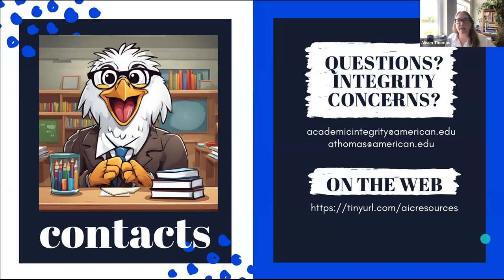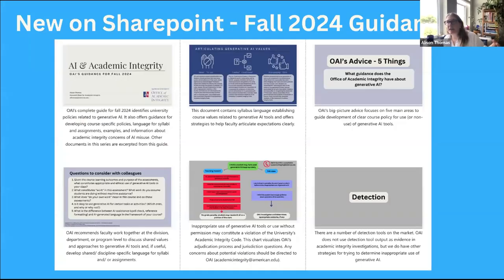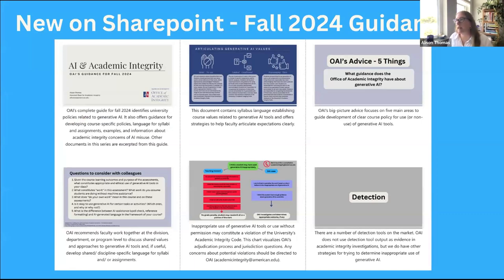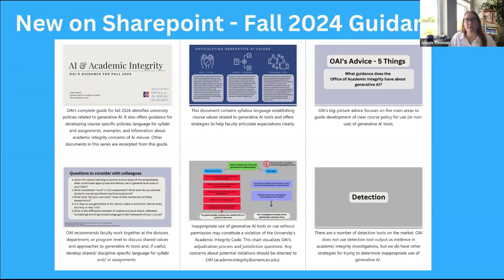I'll point out again that we have a SharePoint — tinyurl.com/AIC-resources. You can also email my team at academicintegrity@american.edu or email me directly at athomas@american.edu. The top-left document is the full fall guidance for AI and academic integrity — 49 pages. I broke it apart into five sections so you can zero in on what's most interesting to you. If you're looking through it and want to see something else addressed, please send me an email and give us feedback about what would be most useful.